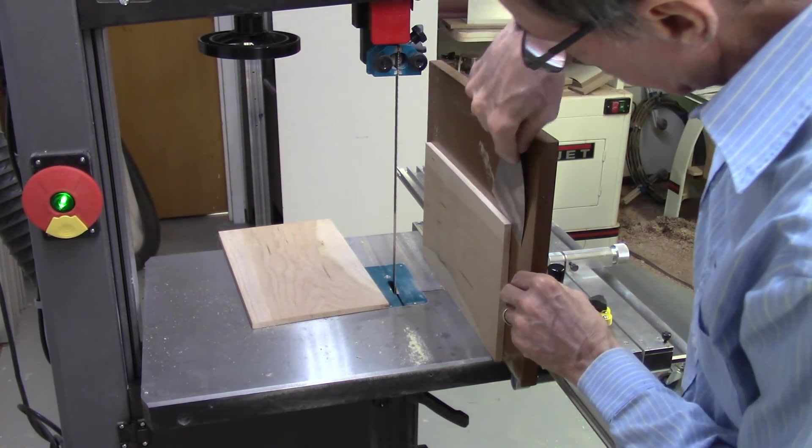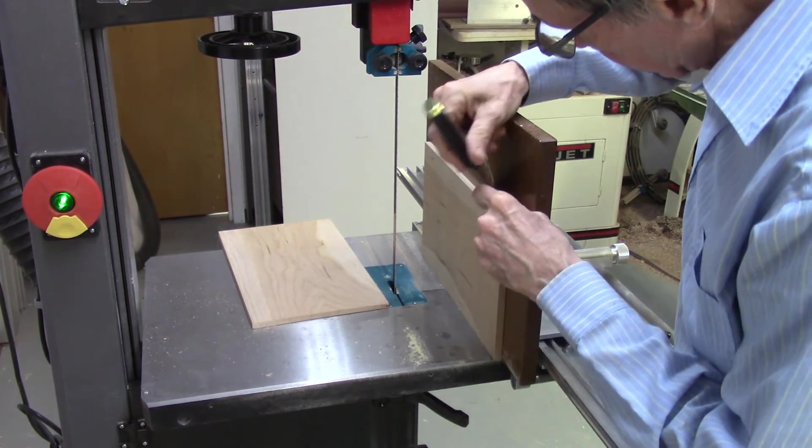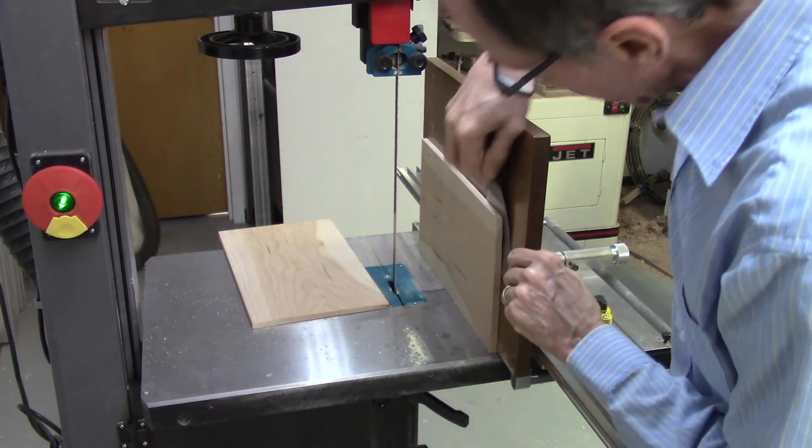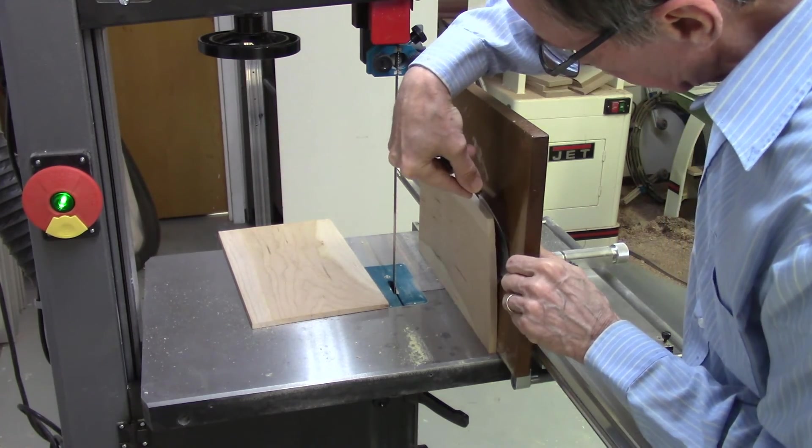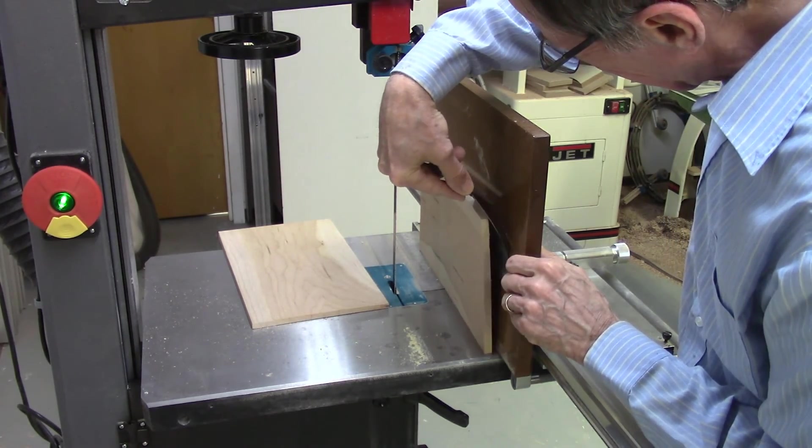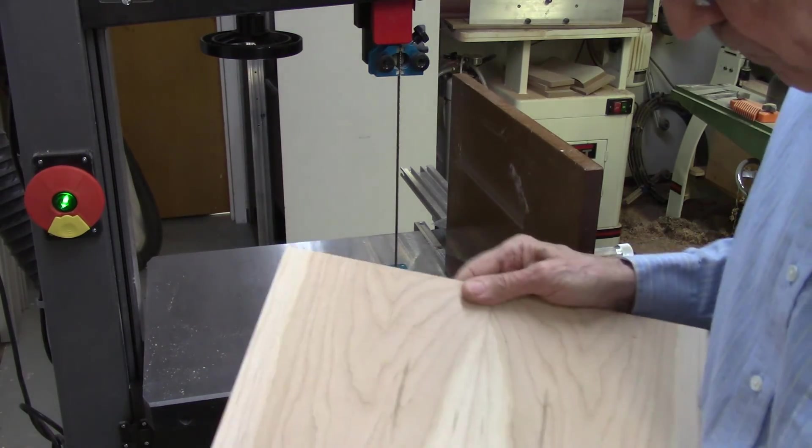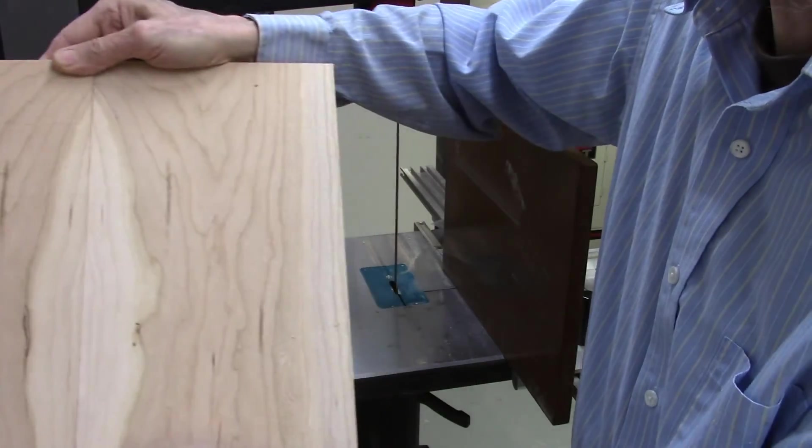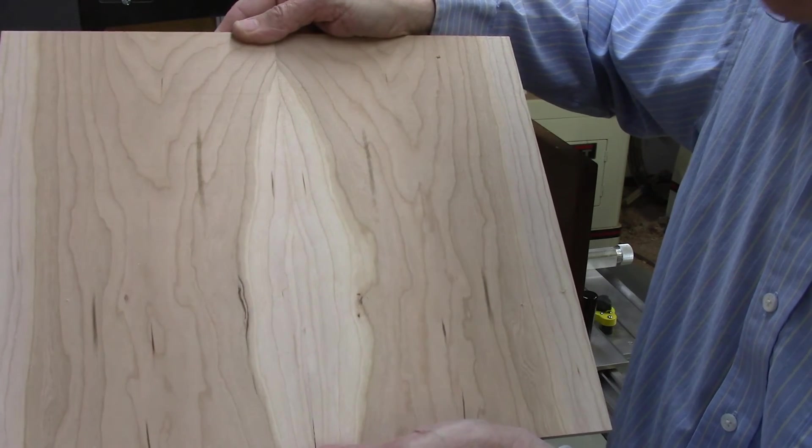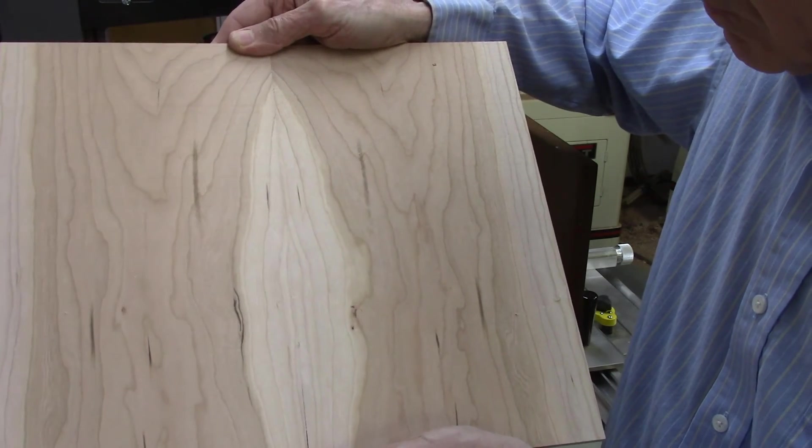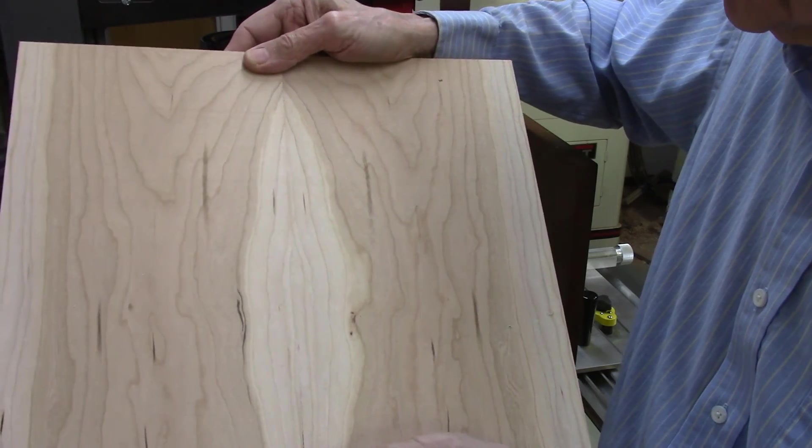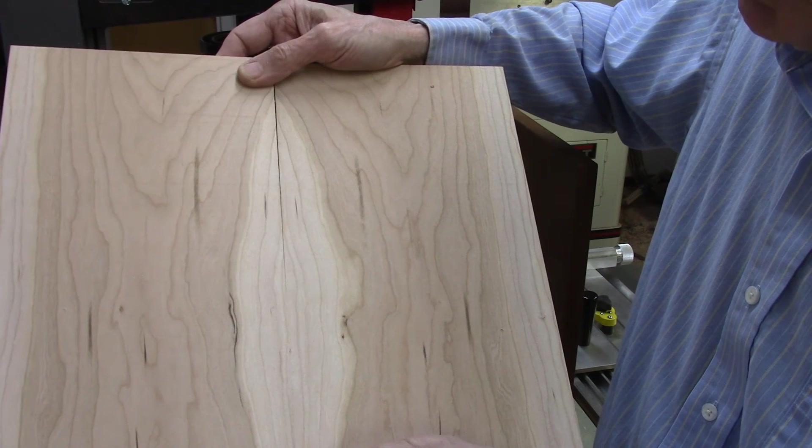Next, remove the board from the sacrificial fence. The double-sided tape holds the board quite firmly, so either a putty knife or a chisel is needed to release the tape. Normally I remove the board from the sacrificial fence off the bandsaw. And there we see the results of our bookmatch panels. I would then run these through either the planer or the drum sander to get them the exact same thickness.